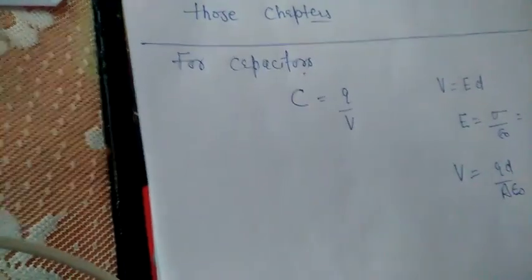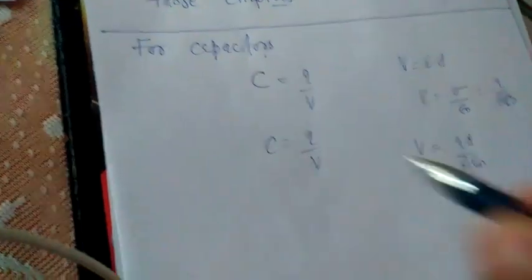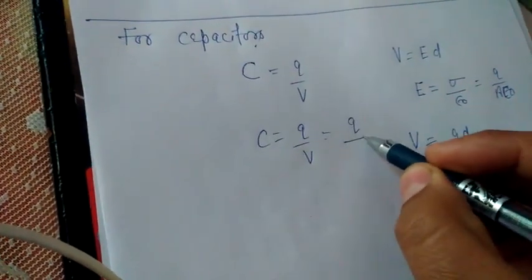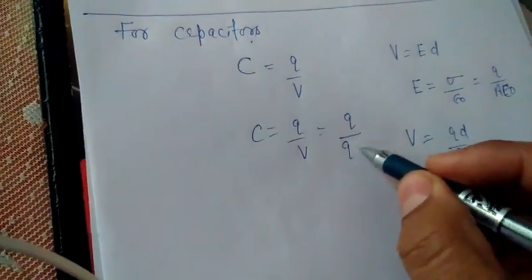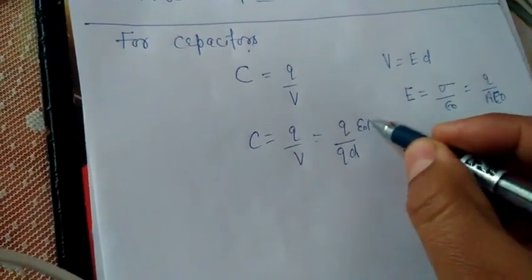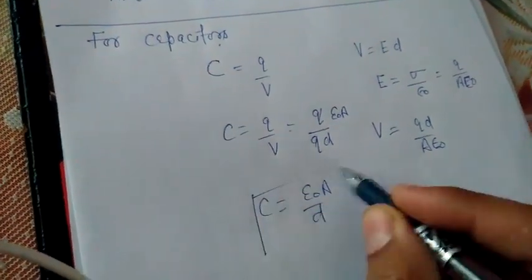And what is the electrical potential? Electrical potential will be Q D over epsilon naught A. And when we calculate the capacitance, what is the capacitance? Charge per unit potential. Charge is Q and potential is Q D over epsilon naught A. Q cancels and C equal to epsilon naught A over D.